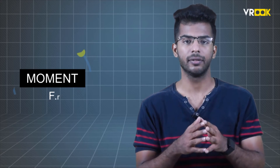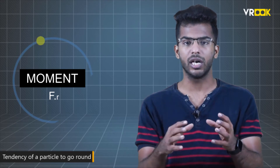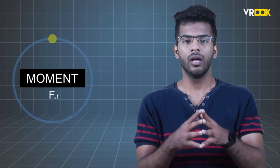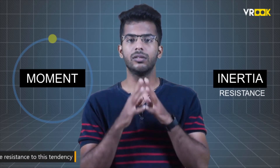Moment of inertia has two terms: moment and inertia. Moment is nothing but force multiplied by some distance r, and it can be understood as the tendency of a particle to go around in a curve or a circle. Inertia, on the other hand, is the resistance to this tendency of going around. Then, what is area moment of inertia?